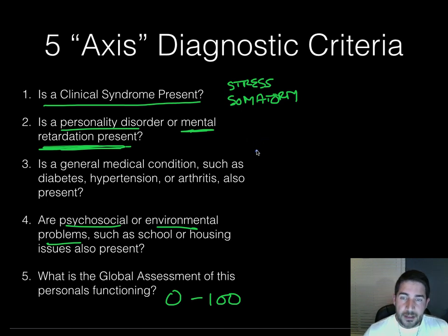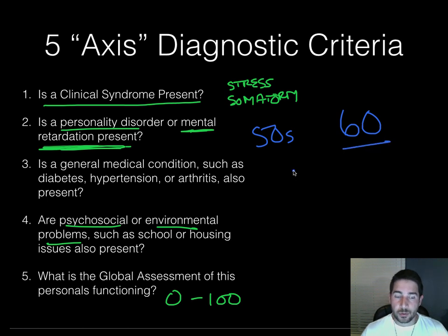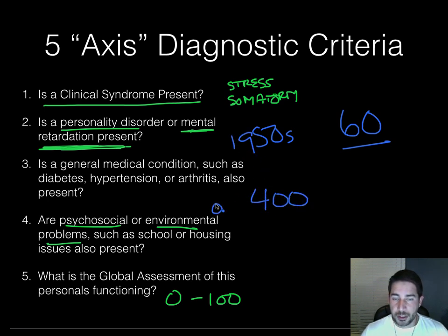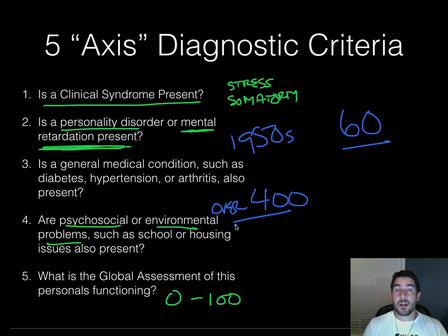One last tidbit: psychological disorder classification has changed a lot in the last 50 to 60 years. In the 1950s, there were only 60 classifiable categories of disorder. Today there are over 400, and it's easier to get a diagnosis. Critics would say that basically any behavior can be classified as a psychological disorder because the criteria are so broad — and that's a controversy in the field about how things are diagnosed.